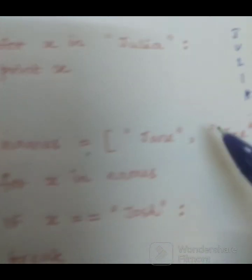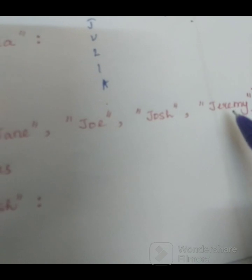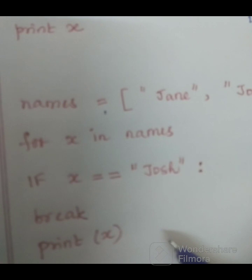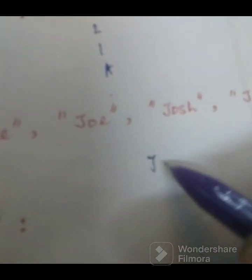So in names, for loop, then x comes. If Josh is equal, then break. So what will be the output? Jane and Joe alone will be printed.